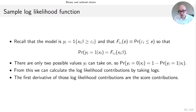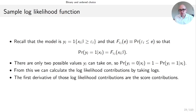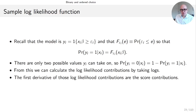Since y_i can only take on two values zero and one, the probability that y_i equals zero given x is one minus the probability that y equals one given x. This is all we need to calculate the log likelihood contribution for observation i. All we have to do is pick either F of epsilon evaluated at x_i beta or one minus that as the likelihood contribution and take logs. For the score contributions, all we have to do is take the derivative with respect to the parameter value.